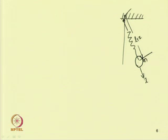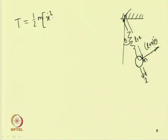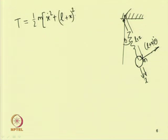The velocity in the x direction is ẋ, and as the system rotates by an amount θ, the velocity in the tangential direction will be (L + x) times θ̇. So one can write the kinetic energy T as: T = ½m[ẋ² + (L + x)²θ̇²].